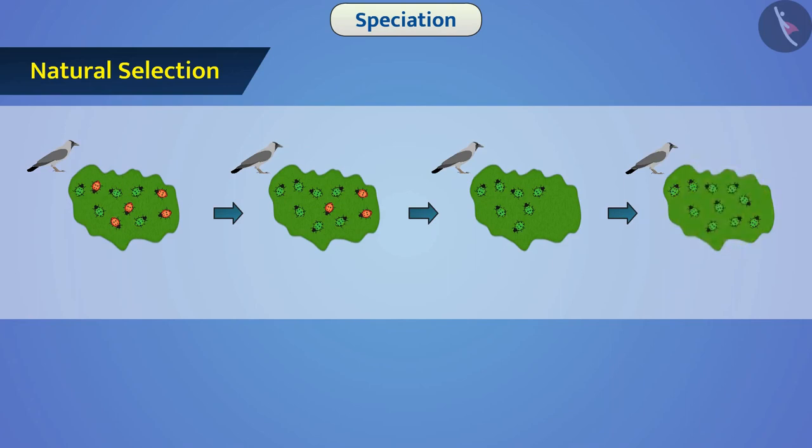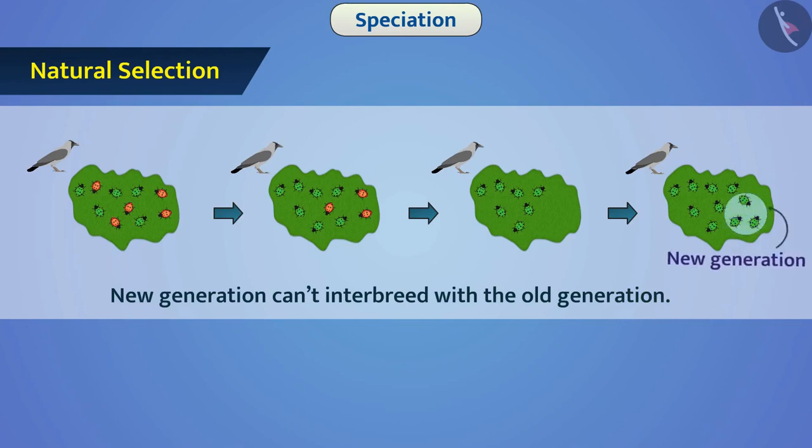Sometimes, the new generation becomes so different that it can't interbreed with the old generation. So, we say that a new species has emerged. That is, speciation has happened.